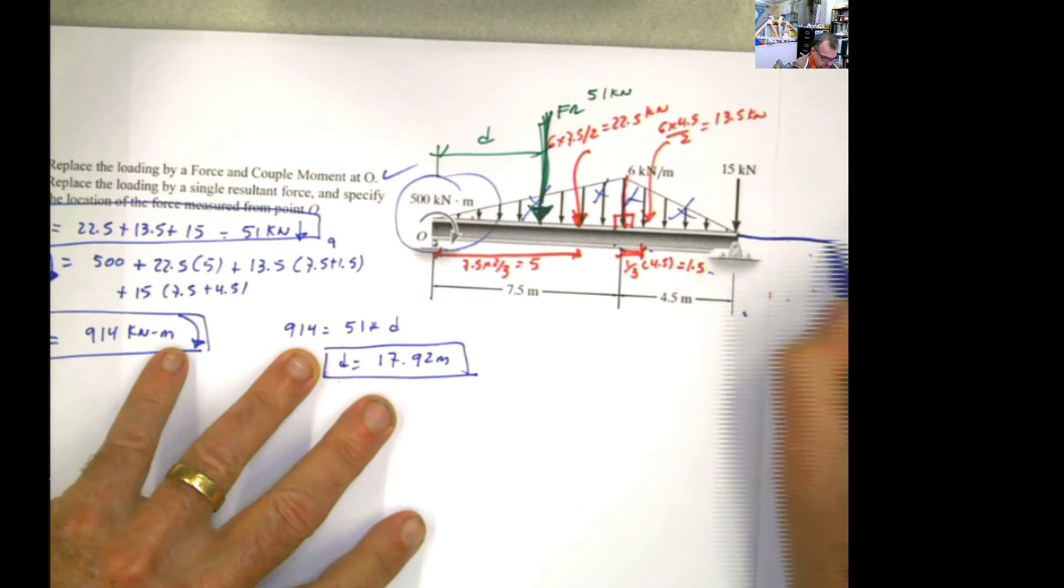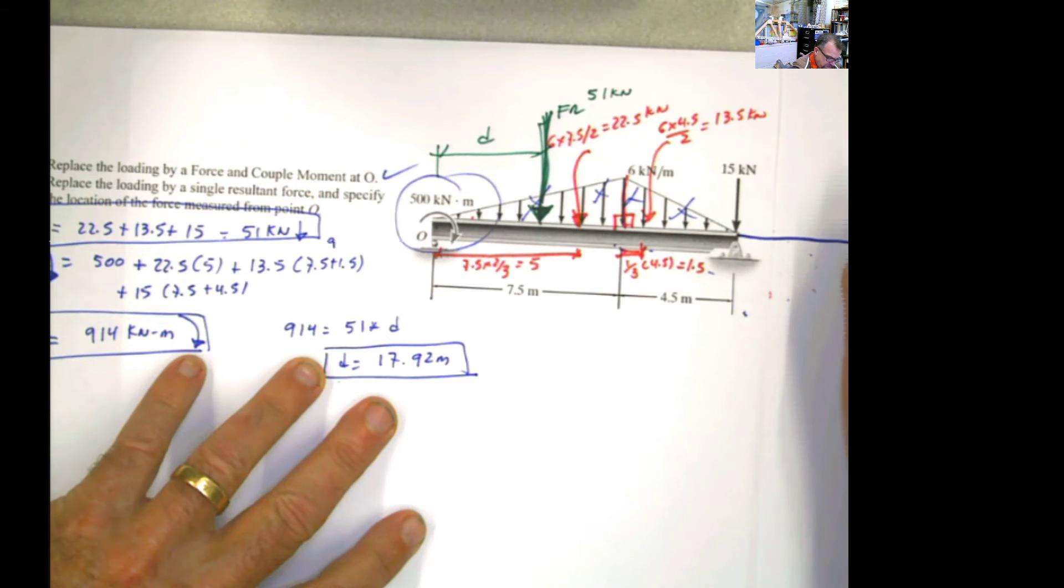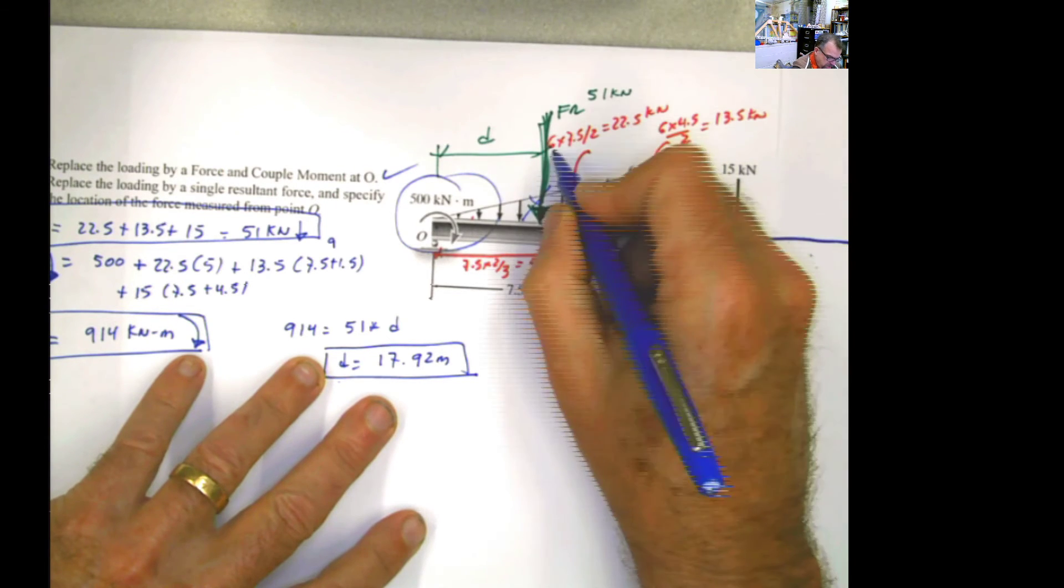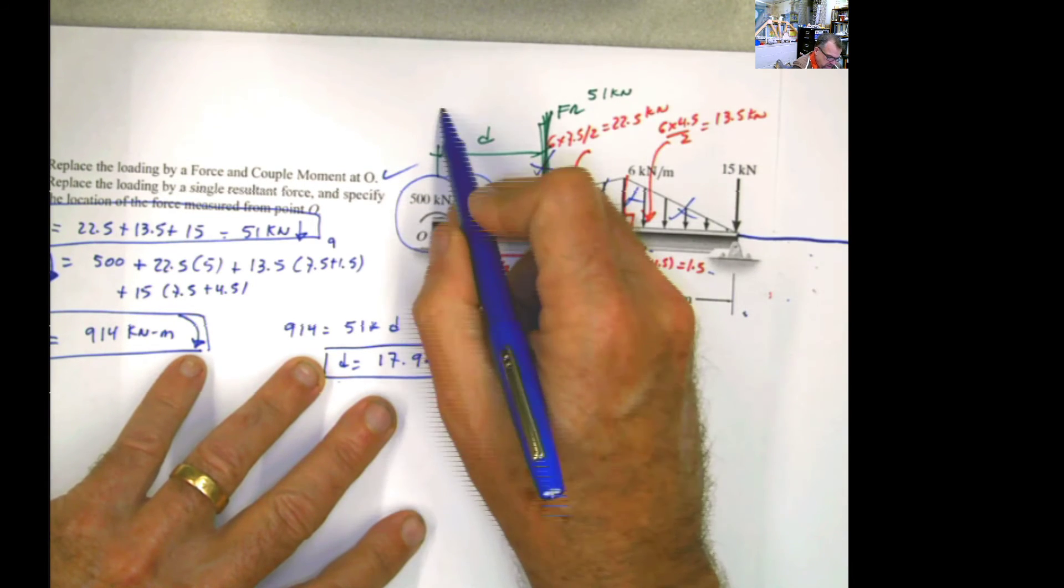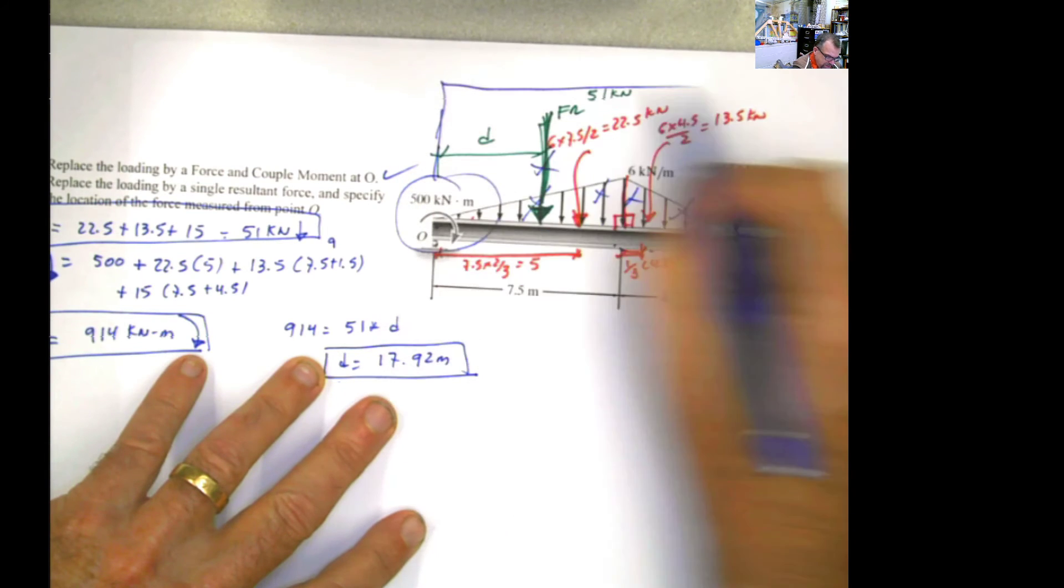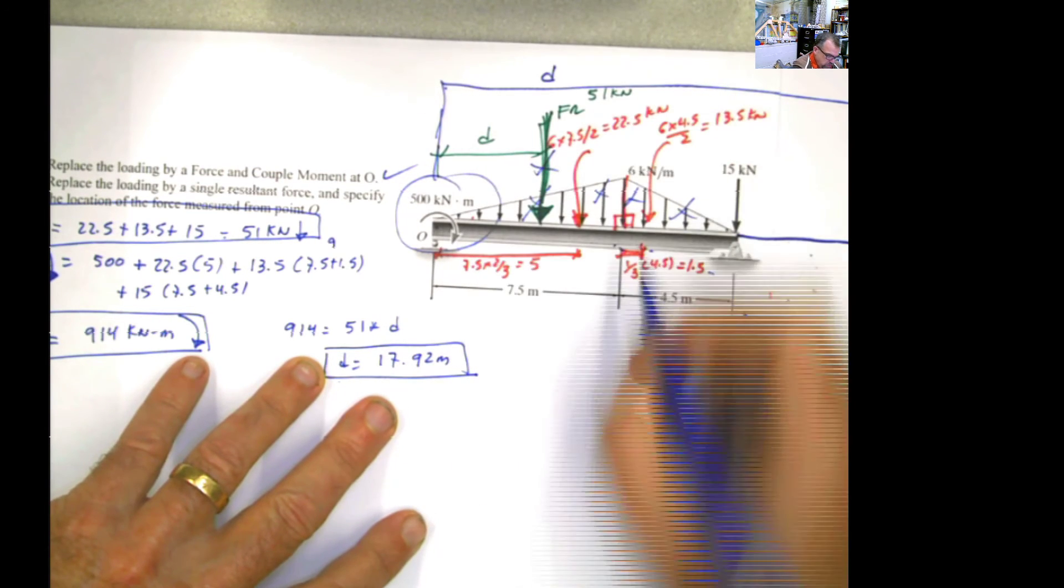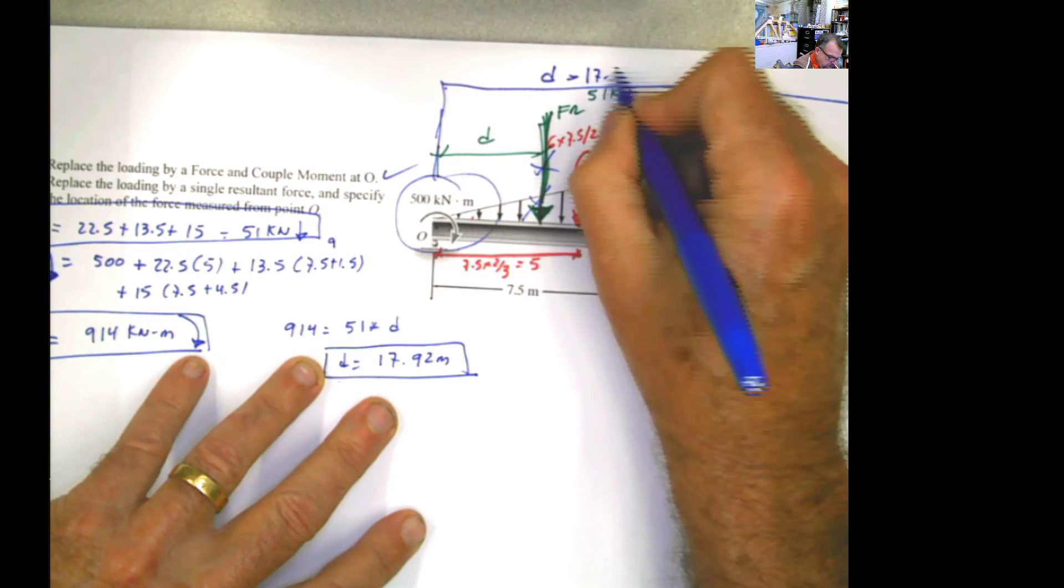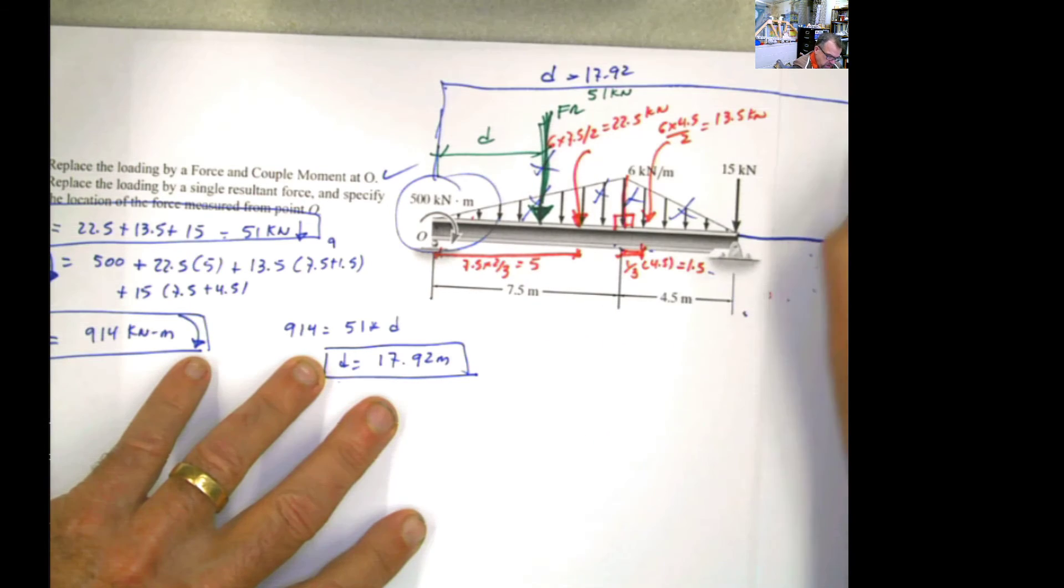Now don't get scared of these results because you have 7.5 and 4.5 is 12. What that means in reality is that for the resultant force to produce the same moment as all the combined forces, that resultant force should be somewhere over here.